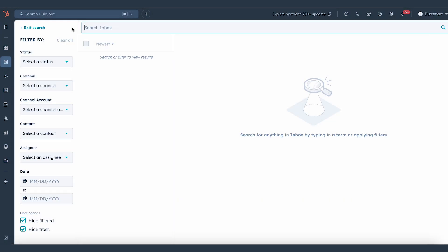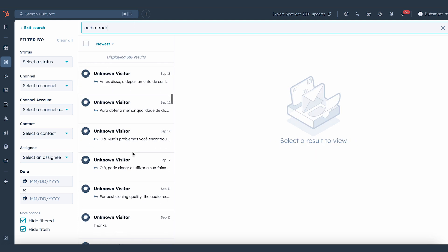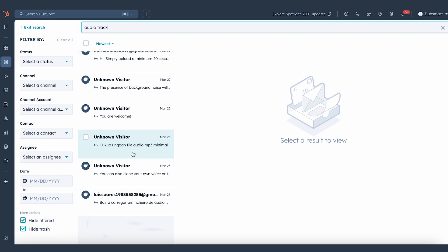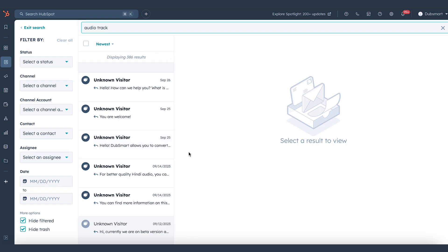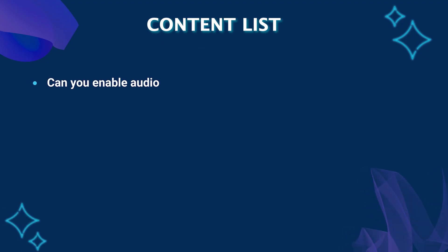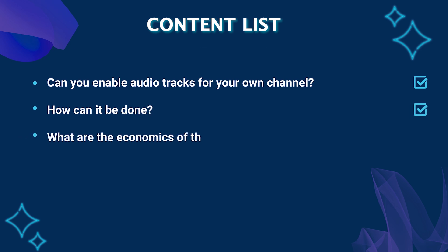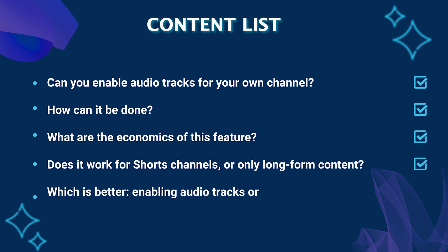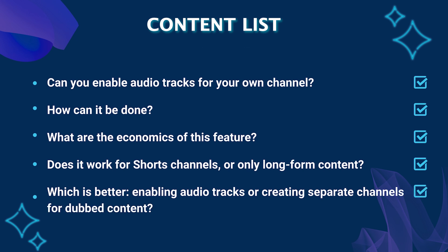Out of the 6,000 questions we've received from our valuable users, we've gathered the most frequently asked ones in this video. We'll be answering the most important: Can you enable audio tracks for your own channel? How can it be done? What are the economics of this feature? Does it work for short channels or only long-form content? And finally, which is better — enabling audio tracks or creating separate channels for dubbed content? Let's dive in.